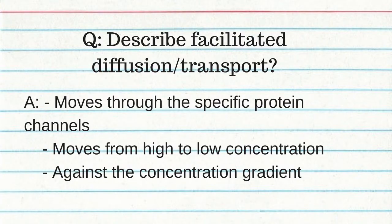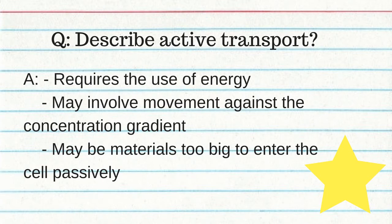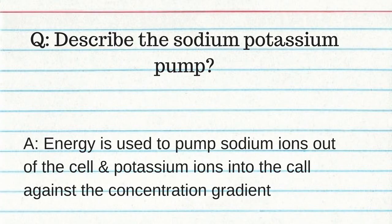Facilitated diffusion moves through specific protein channels, going from high to low concentration. Active transport requires the use of energy; it may involve movement against the concentration gradient, and sometimes the materials are too big to enter the cell passively. The sodium-potassium pump uses energy to pump sodium ions out of the cell and potassium ions into the cell against the concentration gradient.